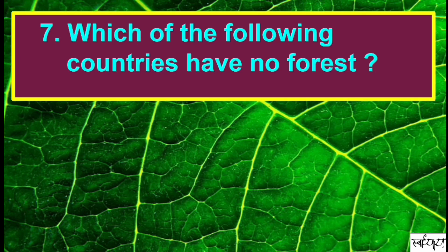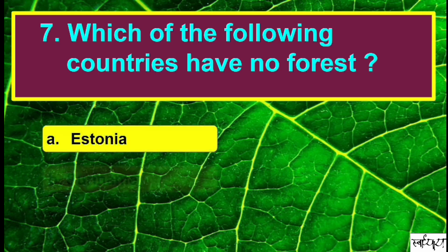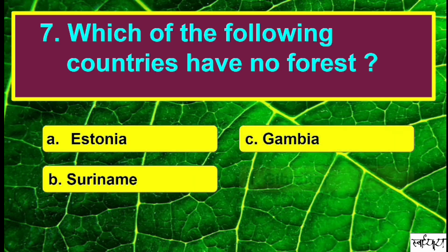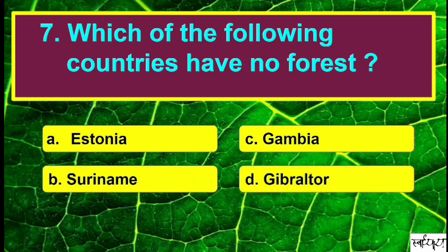Which of the following countries have no forests? The answer is Gibraltar. There are some more countries on the list: Nauru, San Marino, Qatar, and Greenland also do not have any forest cover according to the definition of the World Bank.